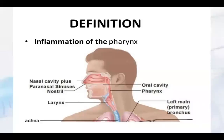What is the definition of Pharyngitis? It is the inflammation of the pharynx. You can see in the oral cavity where the pharynx lies in the body. The nasal cavity, paranasal sinuses, nostril, and larynx are there. Above the larynx there is a pharynx. The inflammation of the pharynx is known as pharyngitis.